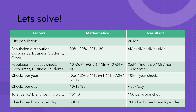We have arrived at a number for one year. Now let us convert this into per day. Remember, this is not for one bank or one branch — this is for the whole city. We divide 10 million by 12 months and 30 days in every month, which gives us 30,000 checks per day for the whole city.